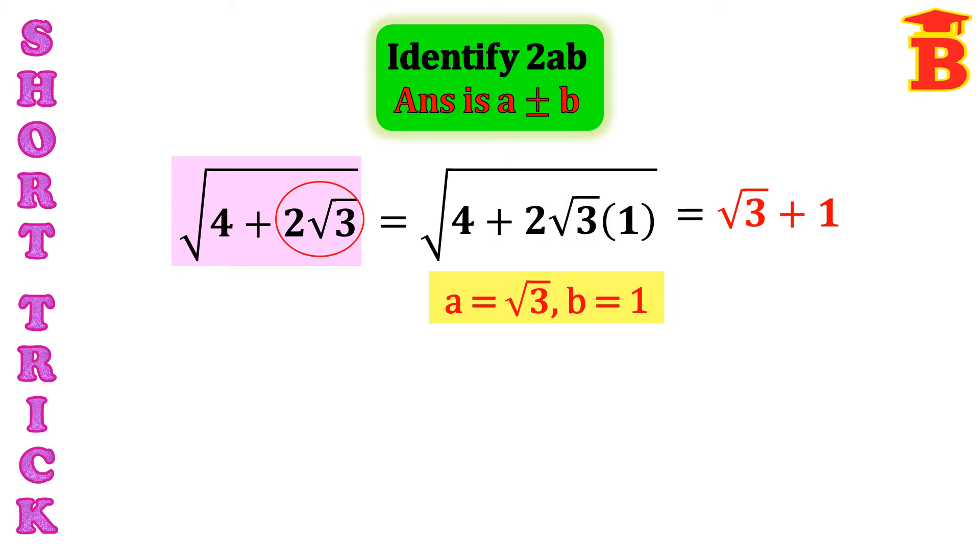The regular steps for the simplification is, the given equation can be written as root of 3 plus 2 root 3 plus 1. That means, this 4 can be written as 3 plus 1. And the next step, this 3 can be written as root 3 square. And this 1 can be taken as 1 square. And the middle term is the same. We write it as 2 root 3 into 1.